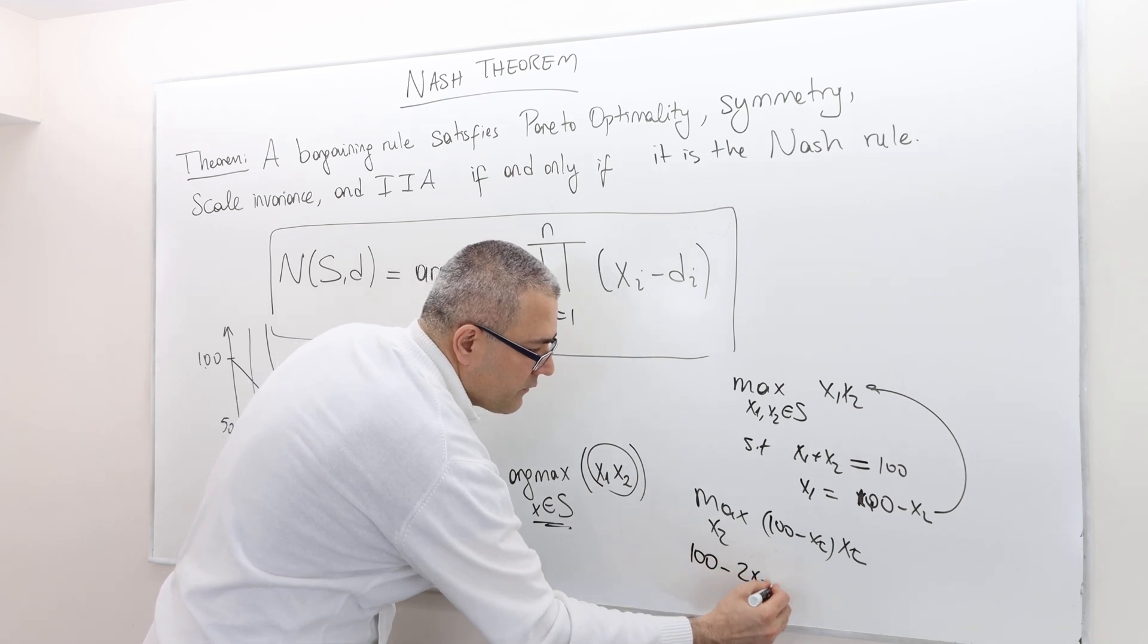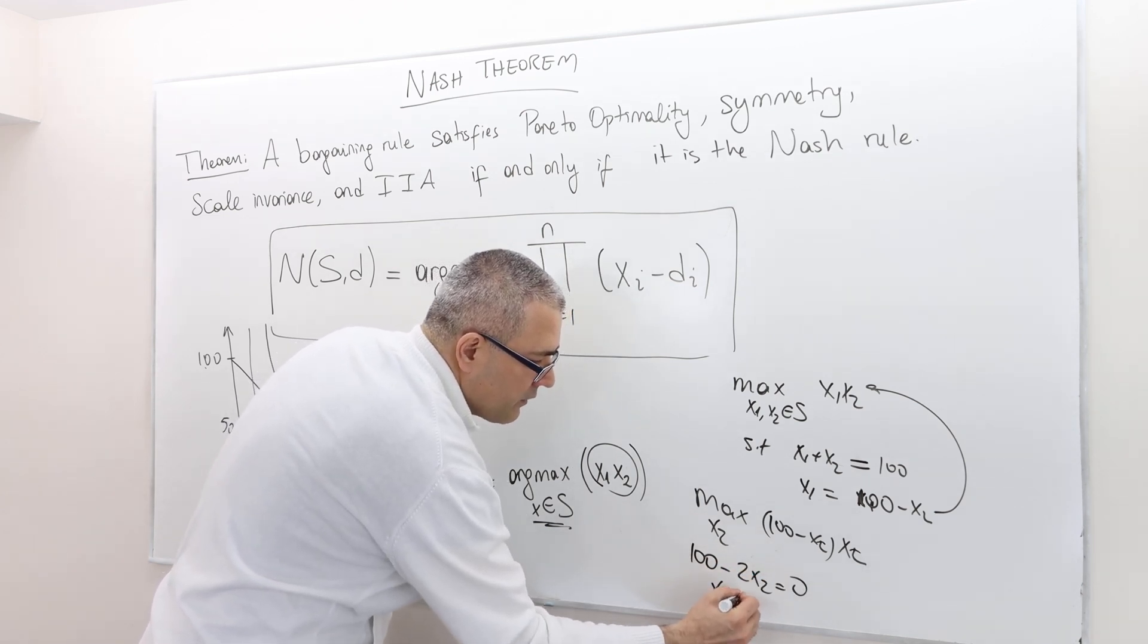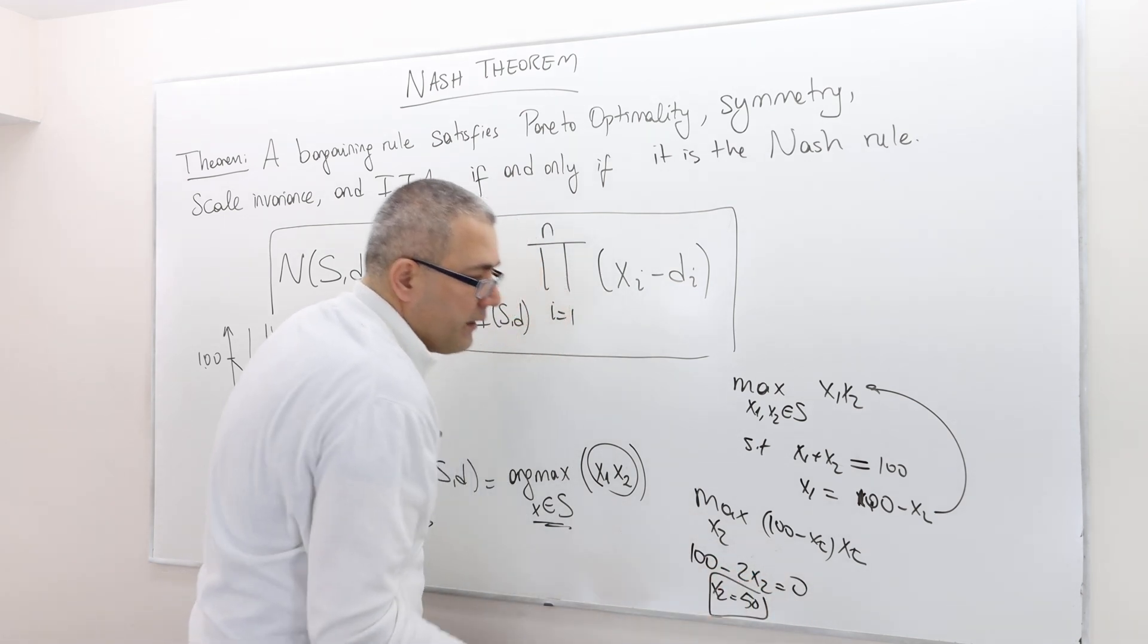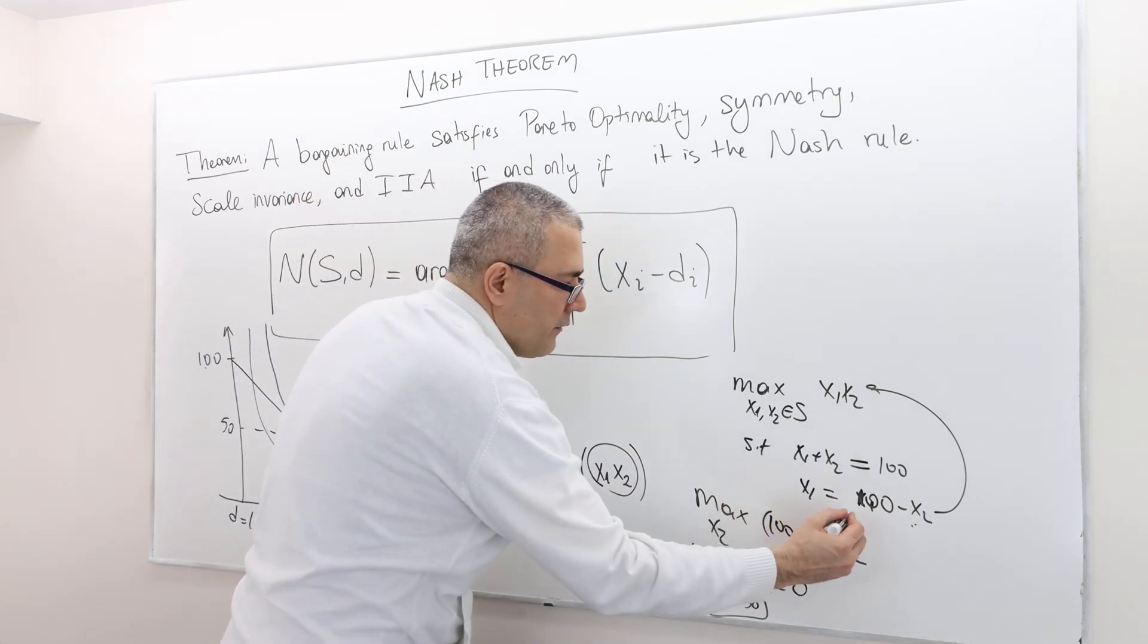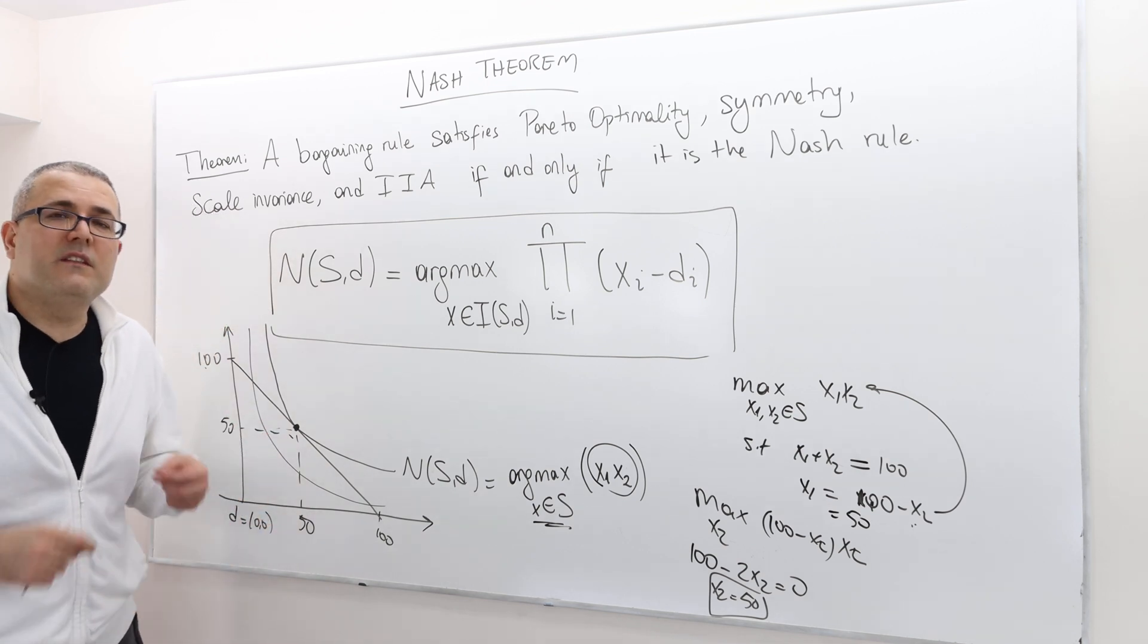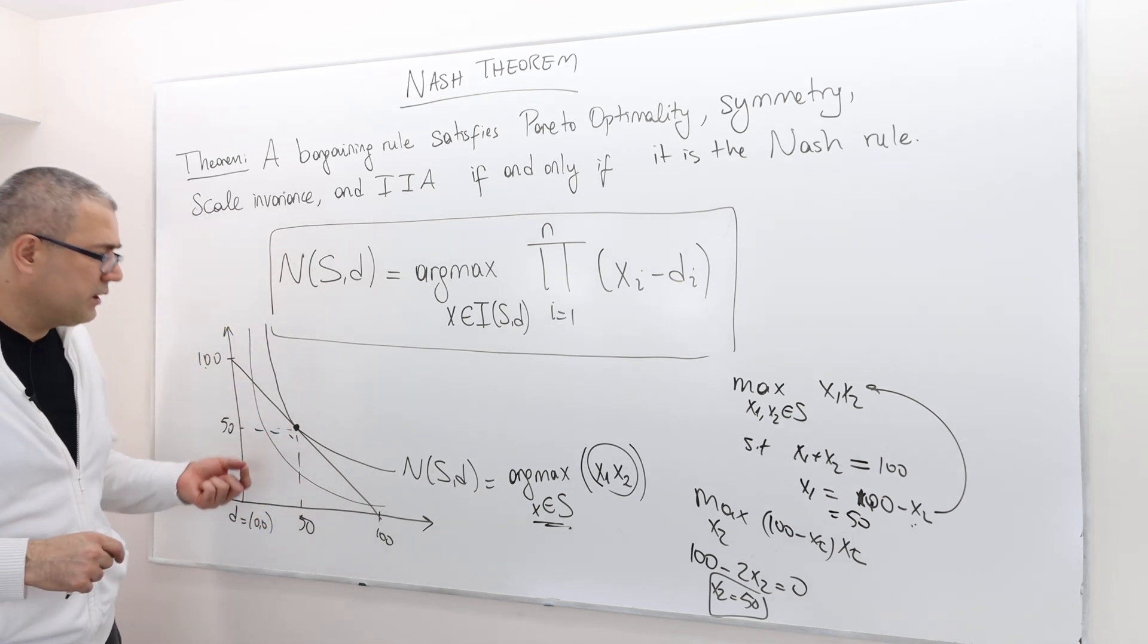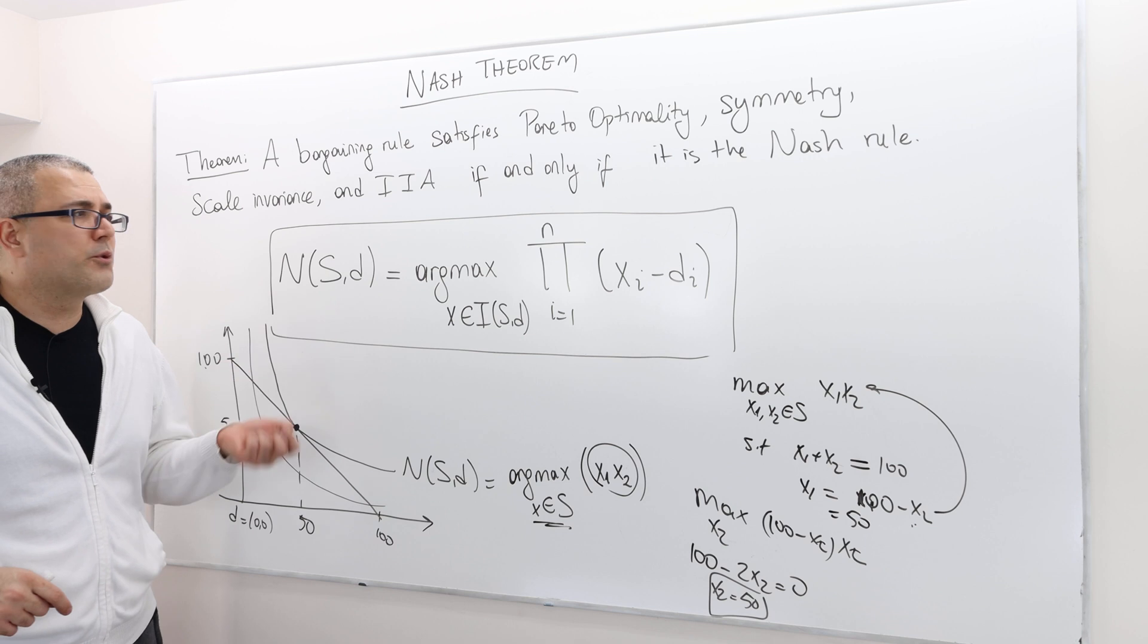So if you do that, 100 minus 2X2 equals 0. So X2 is equal to 50. And you know what? If you plug X2 50 here, X1 should also be 50. So, therefore, 50-50 is the only and unique solution of the Nash bargaining problem.